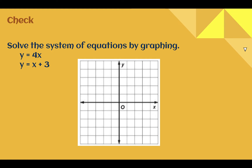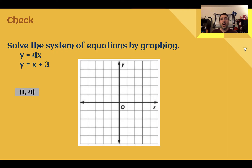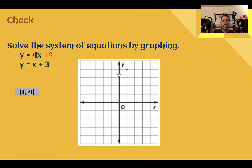Check your understanding: solve the system of equations by graphing. The answer is that the two lines intersect at (1, 4). For y equals 4x, the y-intercept is at 0, and going up 4 over 1 gives the line. For y equals x plus 3, the y-intercept is at 3 and it goes up 1 over 1. Connecting those lines, they intersect at (1, 4), which is the solution.